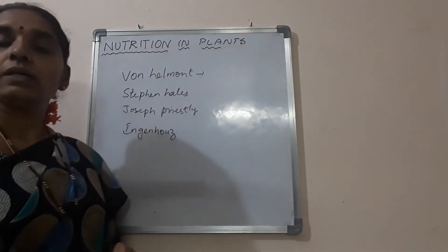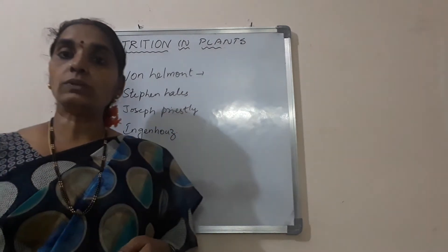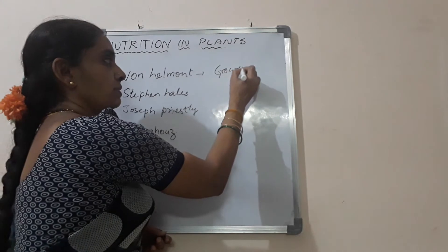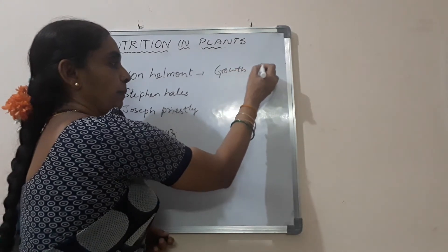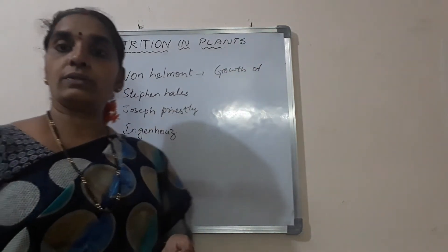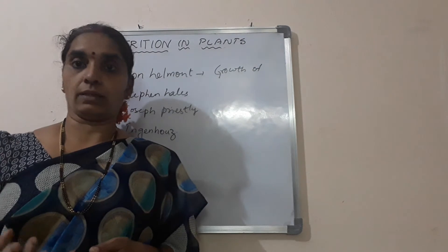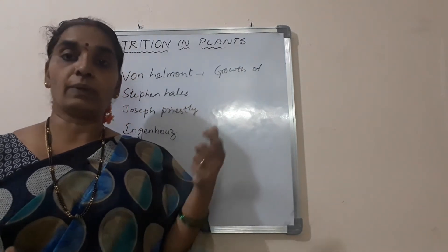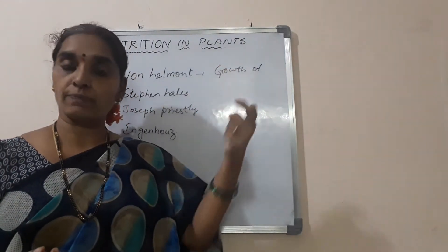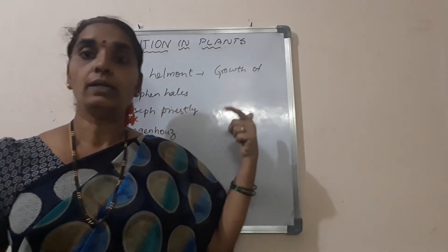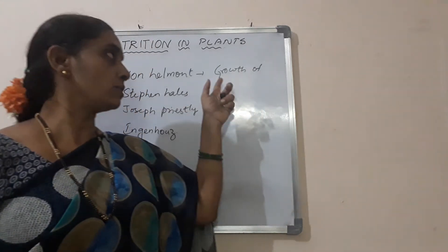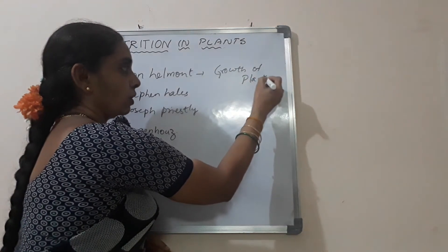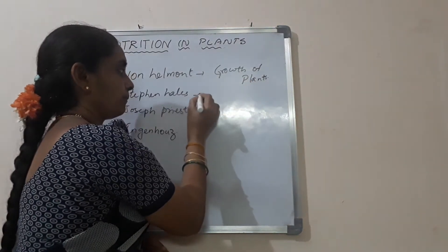Van Helmont said about the growth of plants. What did he say? Plants grow through the water they take in — not from what is directly present in the soil, but through the water absorbed from the soil. So the growth of plants was explained by Van Helmont.